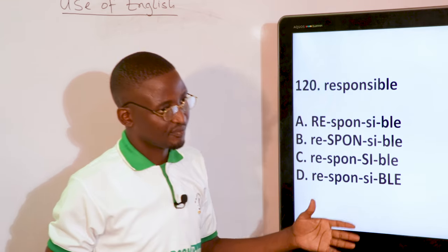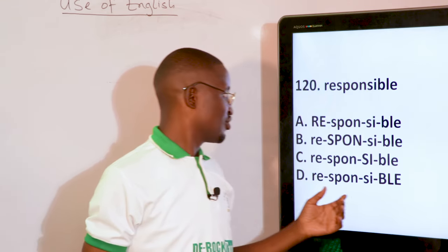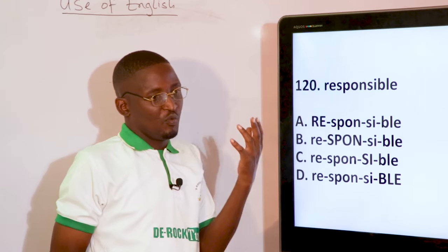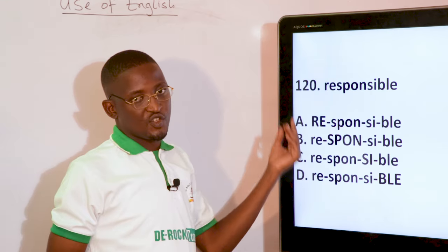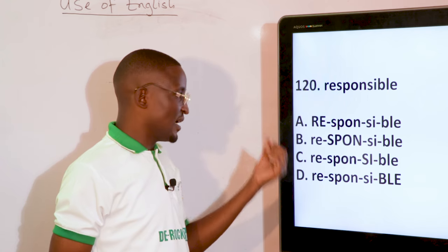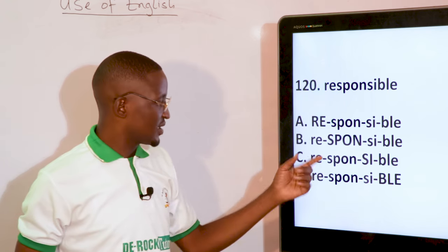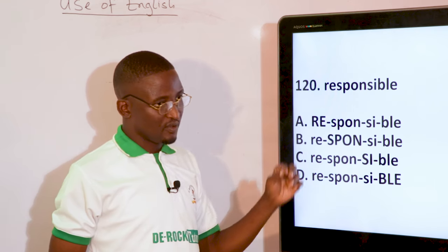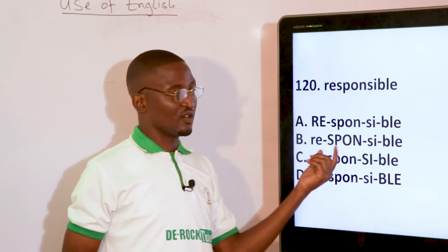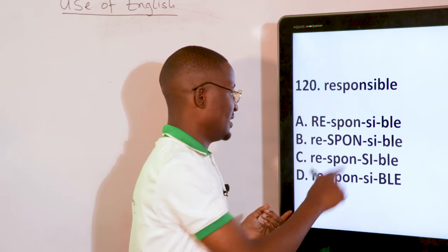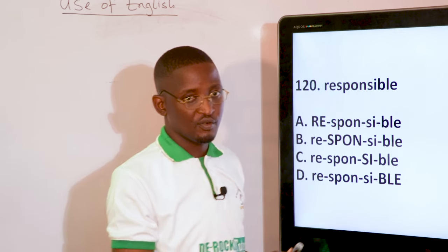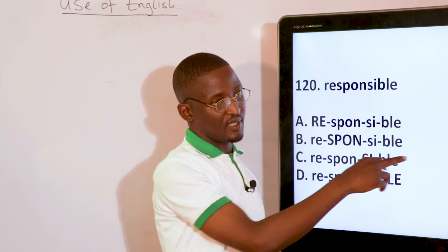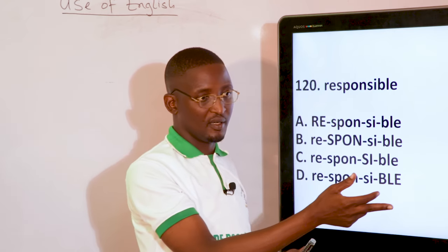RESPONSIBLE — on which syllable does the stress fall? That is the one that is elongated. RESPONSIBLE — that is option B, RESPONSIBLE. So it is on the second syllabic stress. Mind you, the BLE ending words always carry stress on the third syllable from the end.